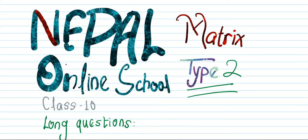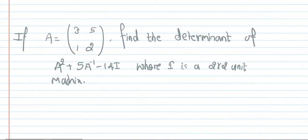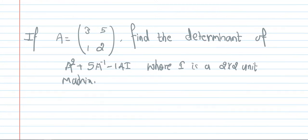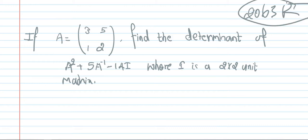Hello everyone, I am going to talk about the matrix related long questions — type 1 and type 2. The first question is from 2063 and it is from a matrix. Find the determinant of A squared plus 5A inverse minus 14I.